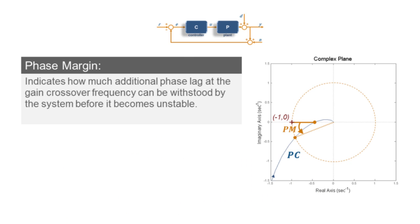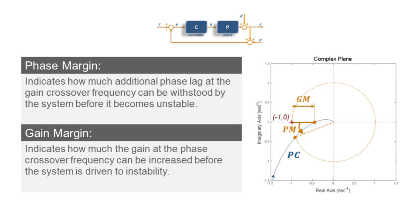In simple terms, the angle safety factor, or phase margin, indicates how much extra phase lag we can have before becoming unstable. And the magnitude safety factor, or gain margin, indicates how much additional gain we can have before becoming unstable.